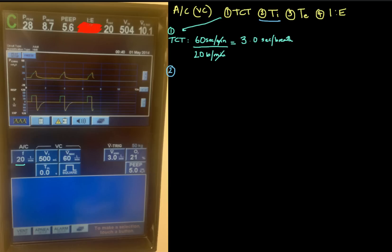We have the answer for our IE ratio blanked out for now. In volume control, we know that inspiration ends when the tidal volume has been delivered to the patient. Once we've delivered 500 cc's of tidal volume, inspiration ends. We talked about this — volume control is volume-cycled. Once this volume has been delivered, that's the end of inspiration.